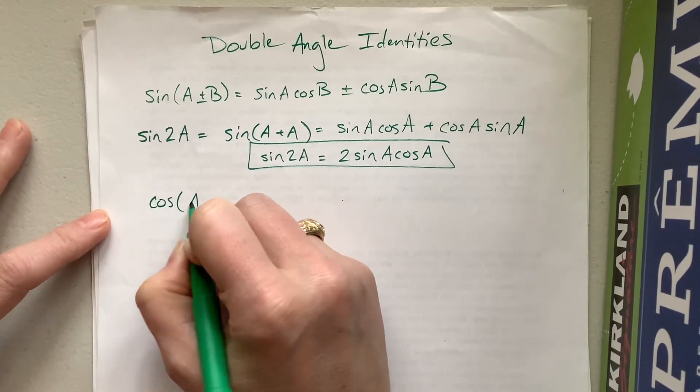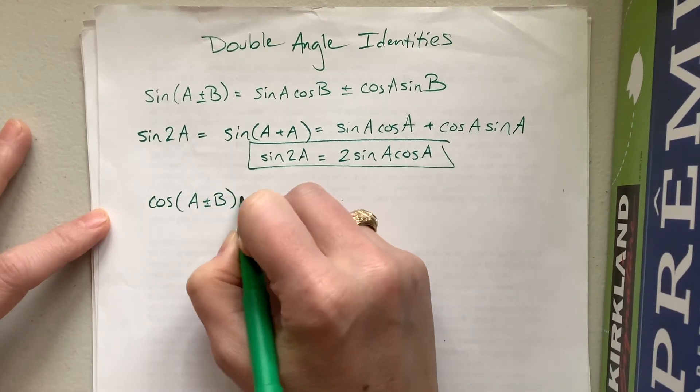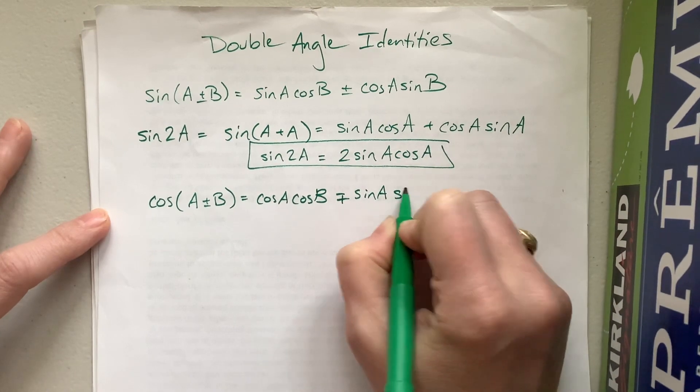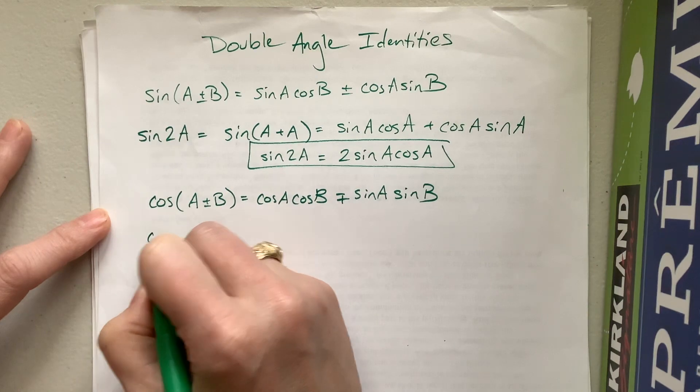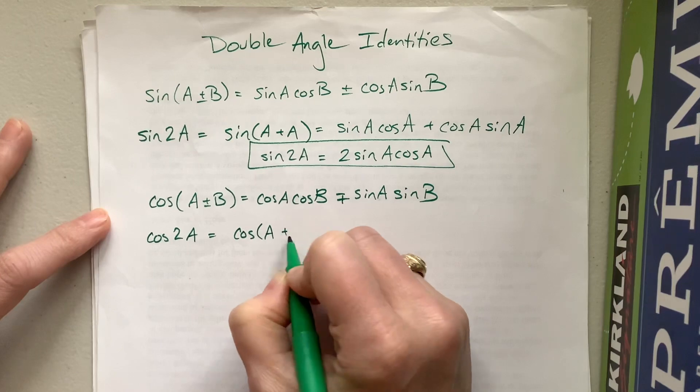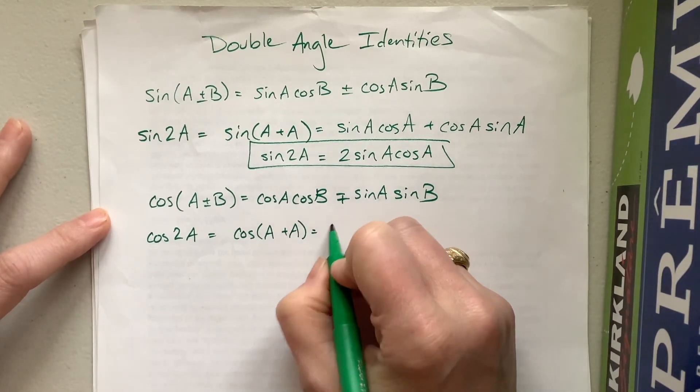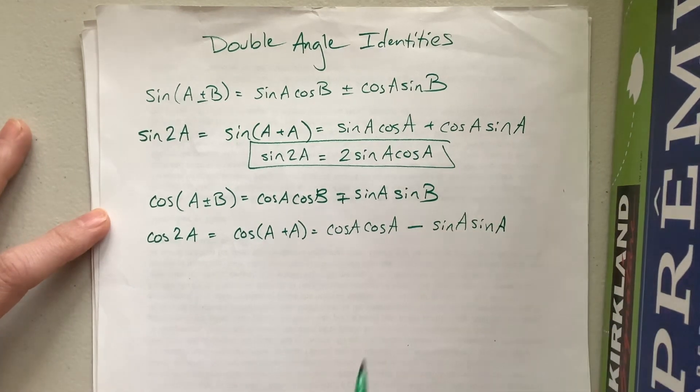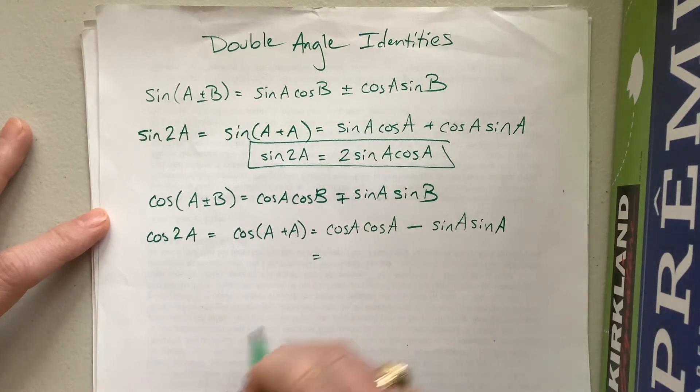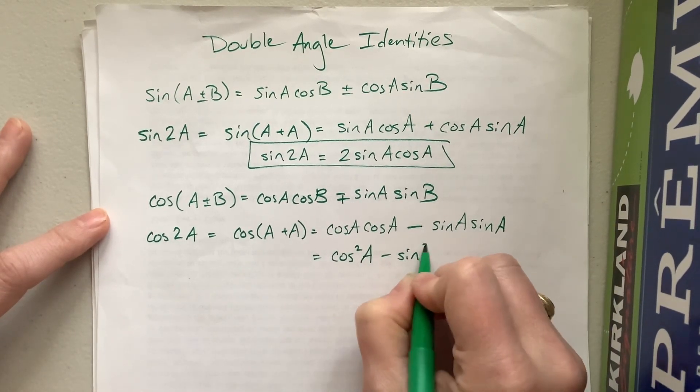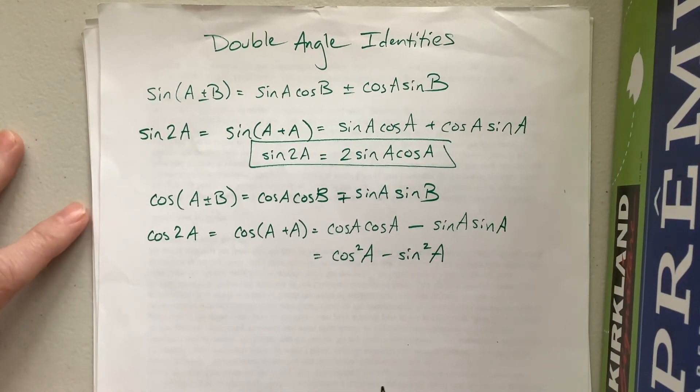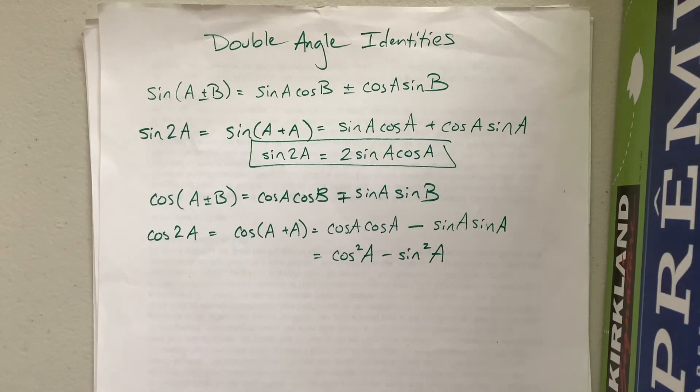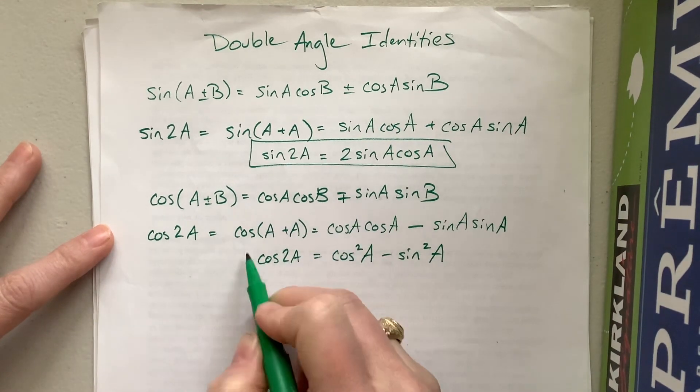A quick refresher, we know that cosine of A plus B is equal to cosine A cosine B minus sine A sine B. So if I want to figure out what cosine of 2A is equal to, this is cosine of A plus another A. So everywhere my B's become A's, so this becomes cosine A cosine A minus sine A sine A. Well, notice cosine times cosine is cosine squared, sine times sine is sine squared, so this gets us here.